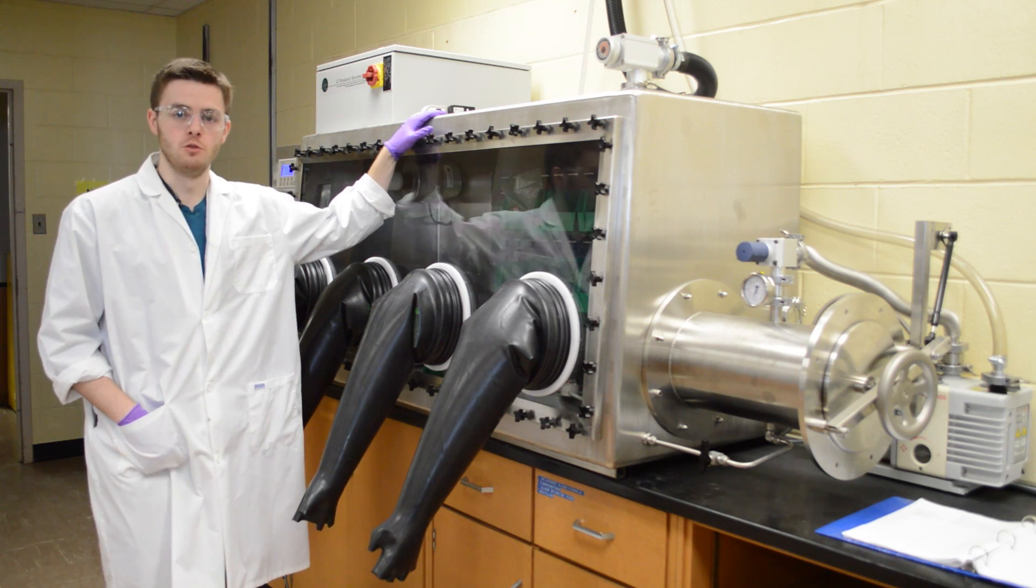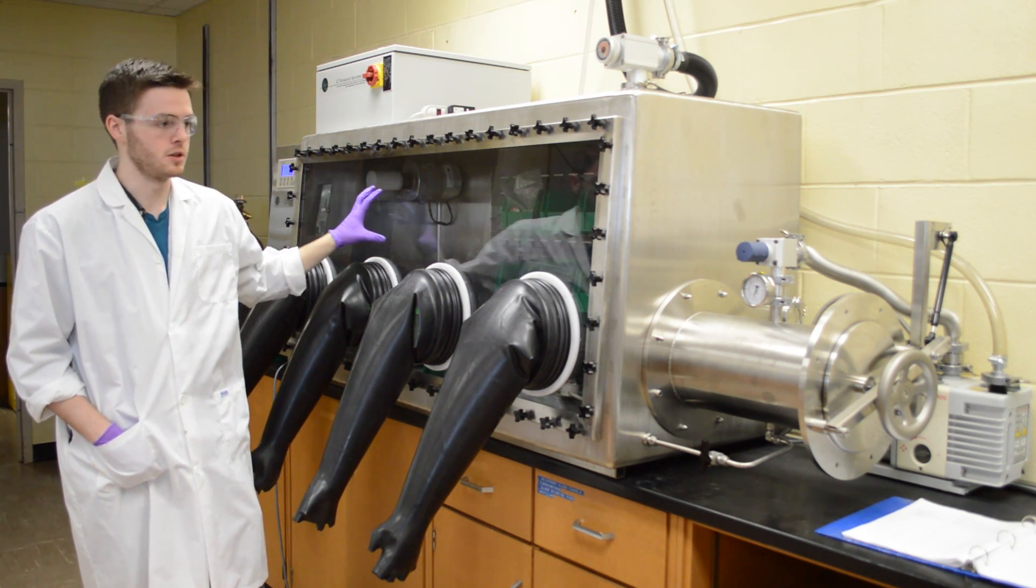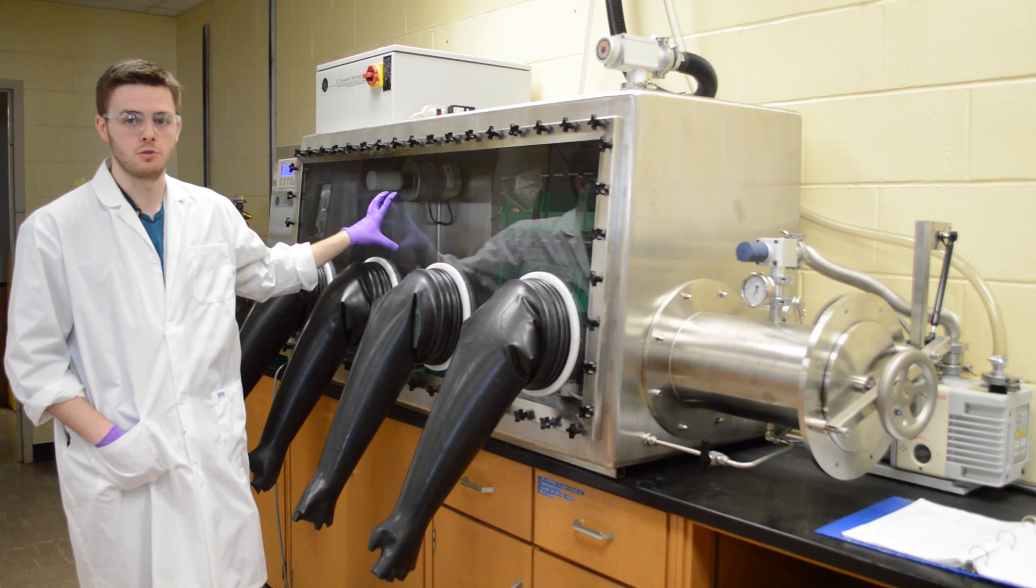So this is the glove box. What these are used for is to do chemistry generally with air-sensitive materials, because everything inside of this is under nitrogen atmosphere at all times.